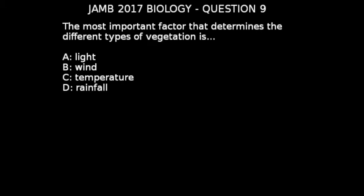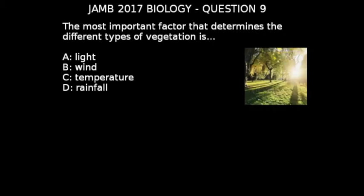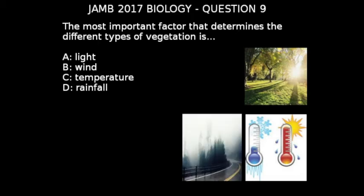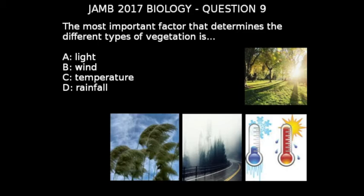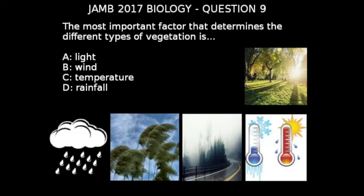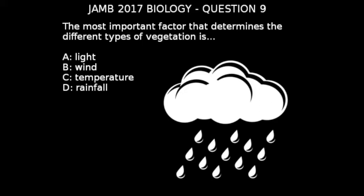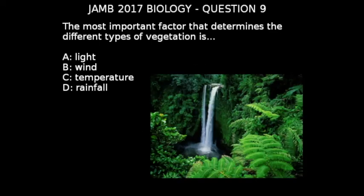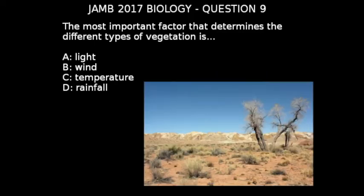Different ecological factors such as light, temperature, humidity, wind, and rainfall affect the types of vegetation in a particular area. But the most important of these is rainfall, because plants require water to grow, and the amount of water available through rainfall in a particular area determines what kind of plants grow there. Areas with moderate to high temperatures and abundant rainfall throughout the year are heavily forested and are called rainforests, while regions with not much rainfall have scarce vegetation and are called deserts.